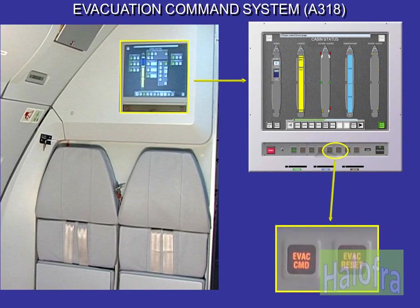On the A318, the emergency evacuation command and reset from the PERSA station are two push buttons, located on the FAP hard key panel.